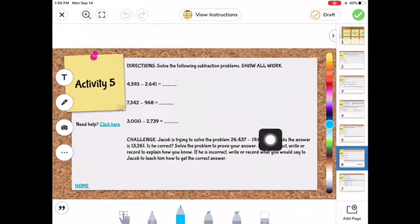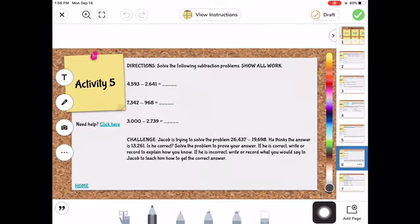So to use the tool, you will come up here. Down here across the bottom, you have all different kinds of writing utensils. I will click on the pencil, and in this case, I will take 4,593.